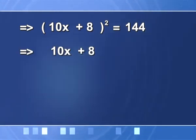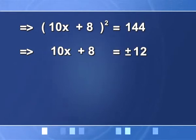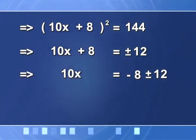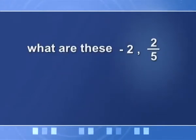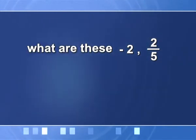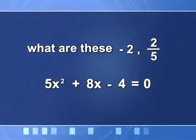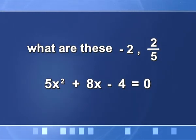So I get 100x² + 160x + 64 = 64 + 80. The left hand side becomes (10x + 8)² = 144. Taking the square root: 10x + 8 = ±12. Shifting 8 to the right hand side and dividing by 10, I get x = −2 or x = 2/5. These are the roots of the equation 5x² + 8x − 4 = 0.